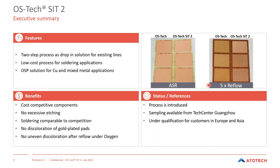The process I would like to introduce today is the OSTEC SIT2. It is a two-step process consisting of an active pre-dip and an OSP depositing step. It is a drop-in that can be used in existing lines. It is a low-cost process that can be used for mixed metal applications — in SIT processing it deposits selectively on copper and not on the ENIG-plated pads. The major benefit is that it is a cost-competitive process — the cheapest final finishing process compared to metal plating.